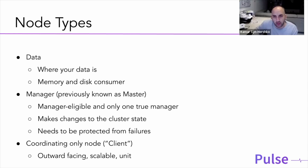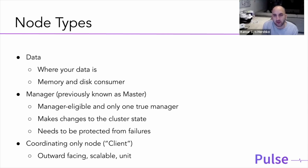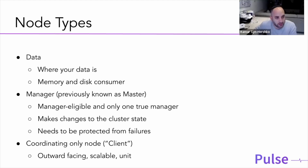A big misconception is that master nodes do a lot of work in the cluster — that's not true. Master nodes only maintain the cluster state. They just need to always be available; they should not be reached for actions, indexing, or queries. In terms of sizing, they don't need to be that strong. We usually keep three of them so we have a quorum for cluster decisions.